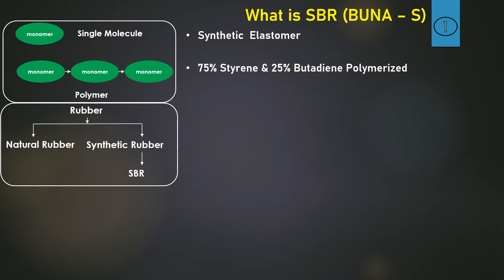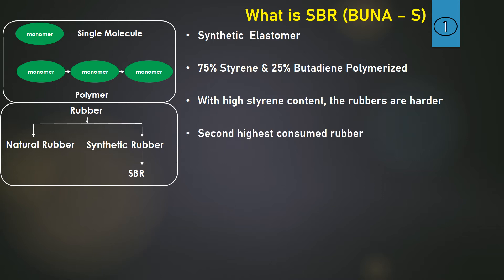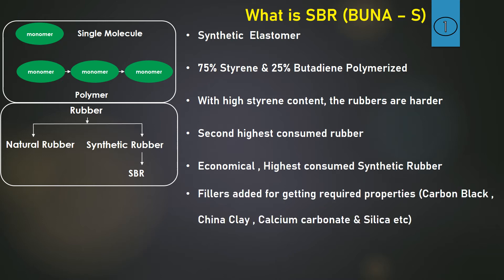75% styrene and 25% butadiene are polymerized and we get SBR rubber. With high styrene content, the rubbers get harder. It is the second highest consumed rubber in the world overall, and it is very economical. In the synthetic rubber category, it is the first highest consuming rubber in the world.